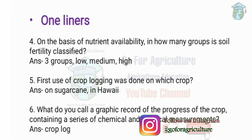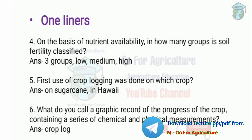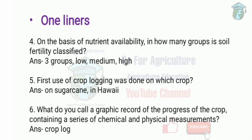On the basis of these three analyses, we get soil fertility, which is classified into three groups: low, medium, and high. For example, a low status of nitrogen is less than 250 kg per hectare, for phosphorus less than 20 kg per hectare, and for potassium less than 125 kg per hectare.